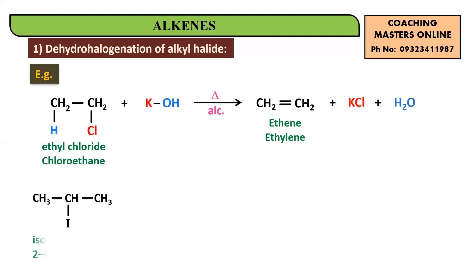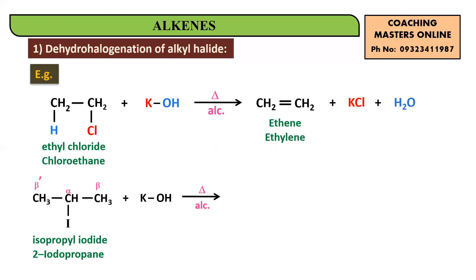Let's take another example — 2-iodopropane. You are treating it with KOH in alcoholic conditions. The alpha carbon (the carbon bearing iodine) is the central carbon. The beta and beta-dash carbons are both CH3 groups — identical, symmetrical groups. So it doesn't matter from which side you remove the hydrogen.